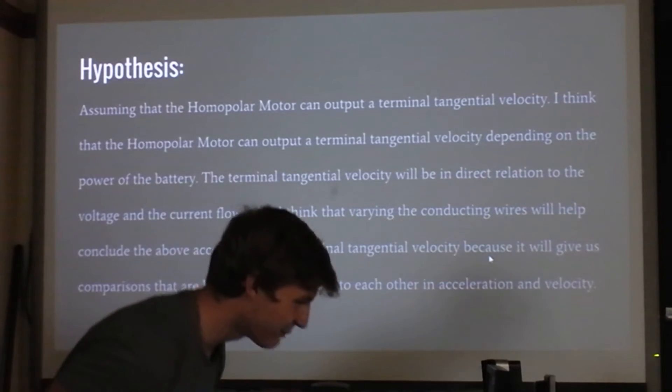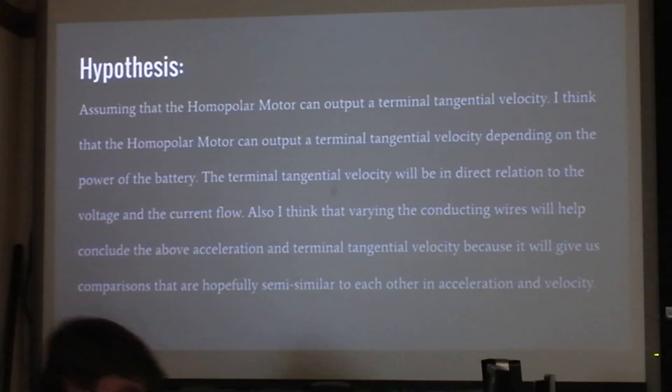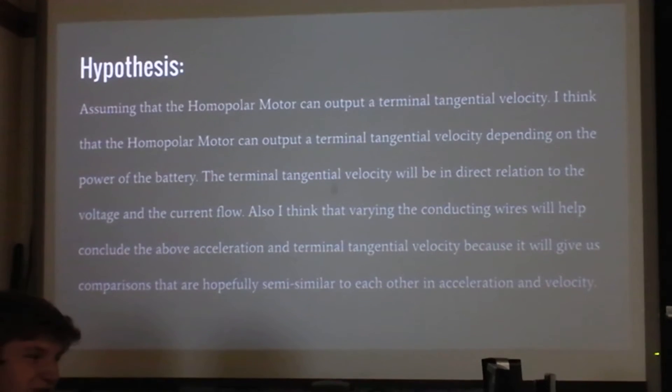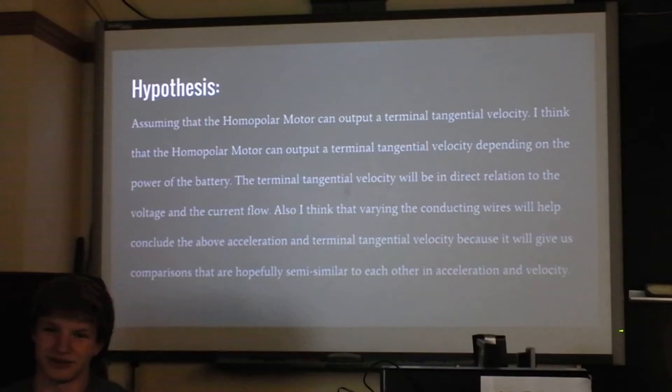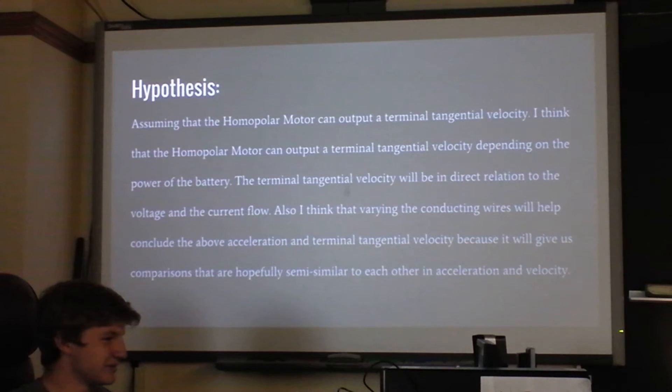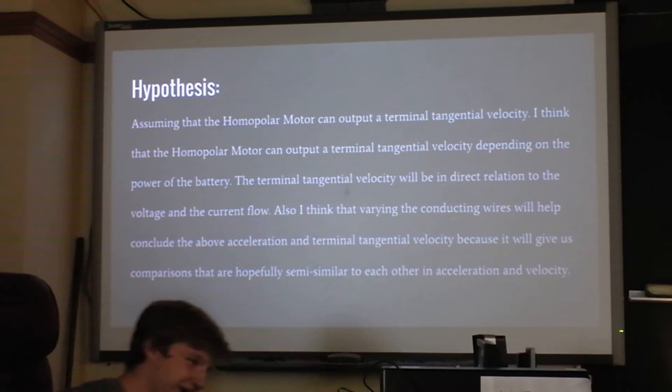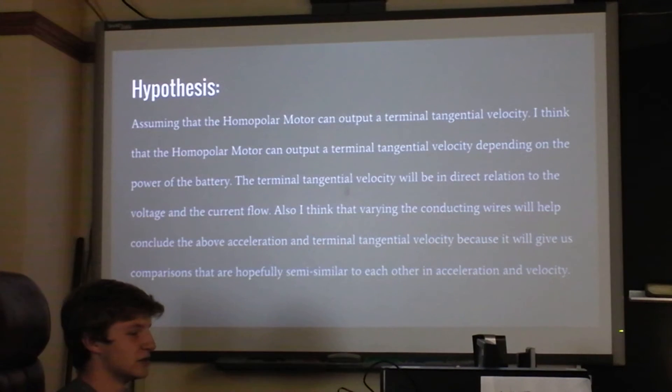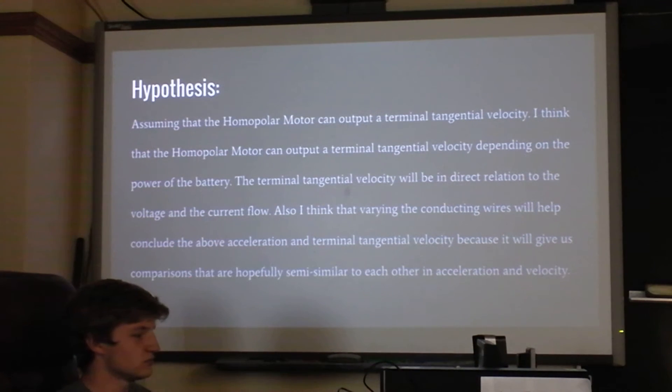So my hypothesis was that the terminal tangential velocity is a thing, because if it wasn't, then something would be going increasingly fast for infinity, which is kind of scary and probably could destroy the universe. And that the terminal tangential velocity would be a direct relation to the voltage and current flow.